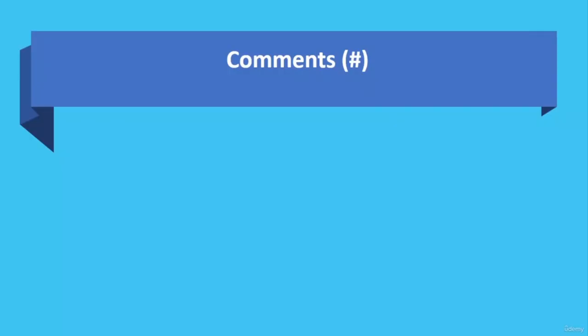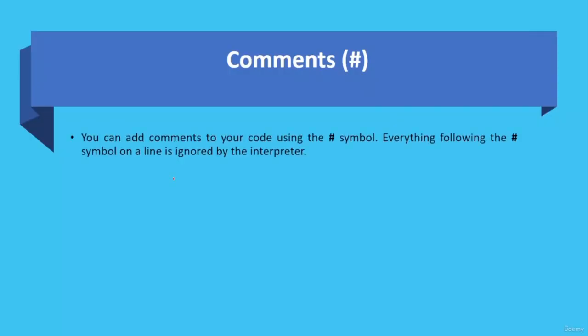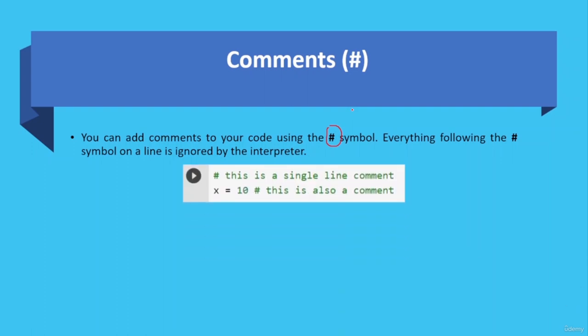Let's get started. You can add comments to your code using the hash symbol. Everything following the hash symbol on a line is ignored by the interpreter. Here you can see the example — everything following the hash symbol is ignored. This is a comment, and here is another comment starting from the hash. The variable definition is not part of the comment because the comment comes after the declaration.